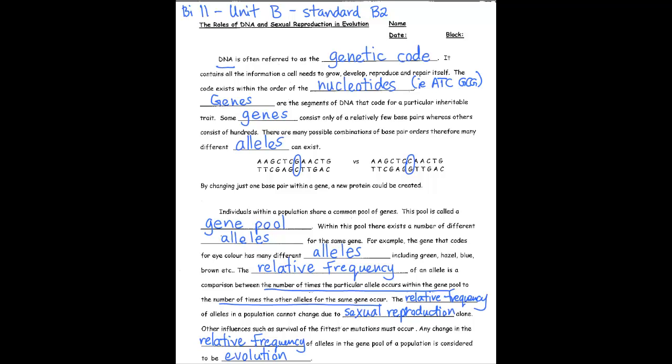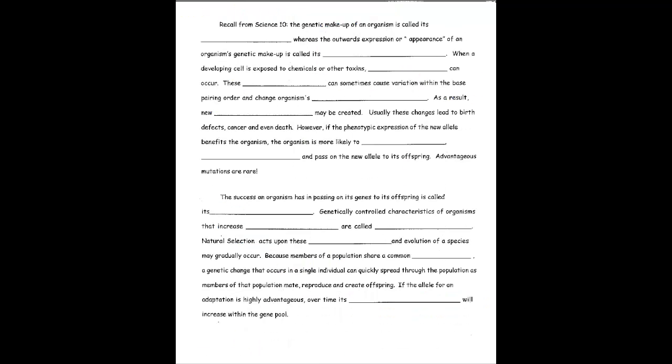Okay, so let's flip over to the next page here. Now, I need you to recall from Science 10, way back in Science 10, the genetic makeup of an organism is called its genotype.